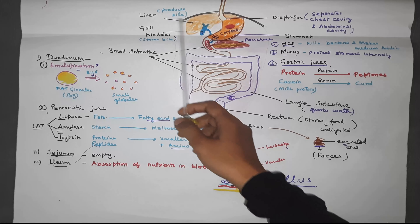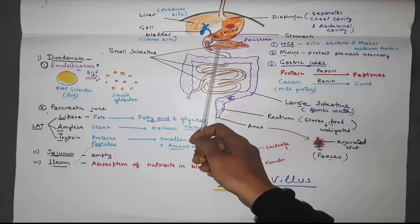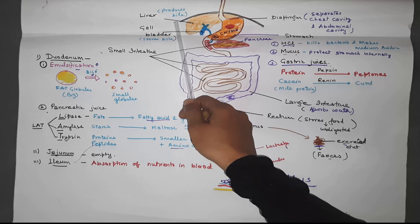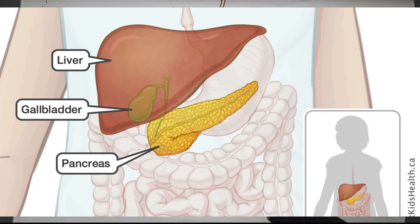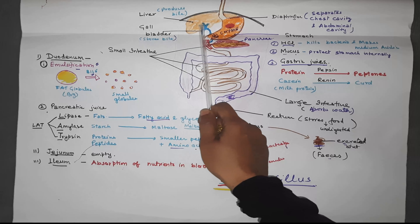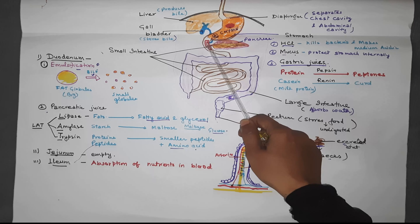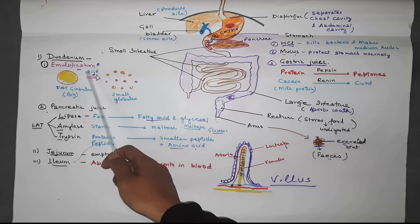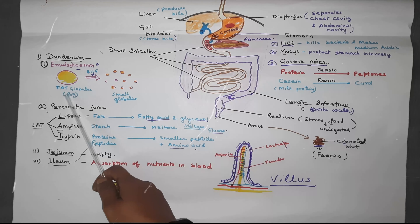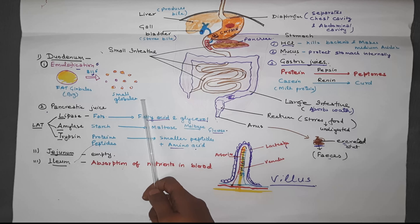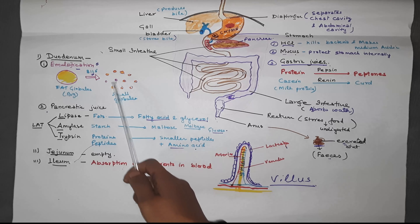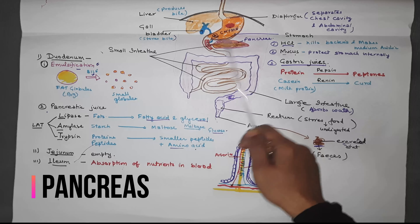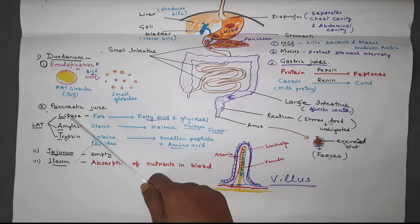The duodenum has two big associated glands: the liver and the pancreas. The pancreas releases pancreatic juices, and the liver produces bile which is stored in the gallbladder. Remember the difference: the liver produces bile and the gallbladder stores bile, releasing it into the duodenum when required. In the duodenum, the process of emulsification takes place — bile changes big fat globules into small droplets, making digestion easier by increasing surface area.